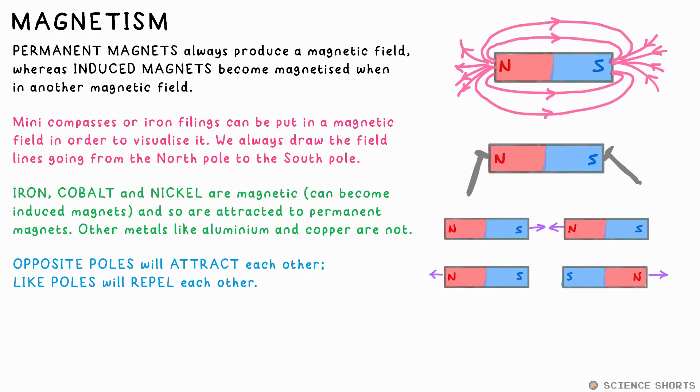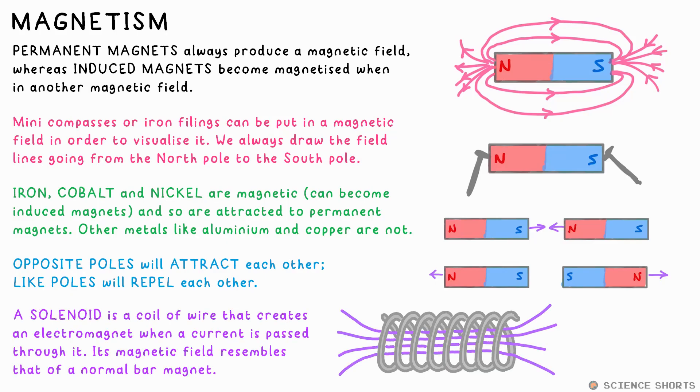and they repel if the same poles are facing each other. A solenoid is just a coil of wire that an electrical current can be passed through and it produces a magnetic field, the shape of which is very similar to that of a bar magnet. You can increase the strength of the magnetic field made by increasing the current or adding more turns in the coil.